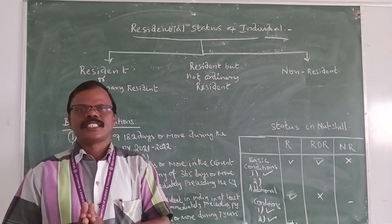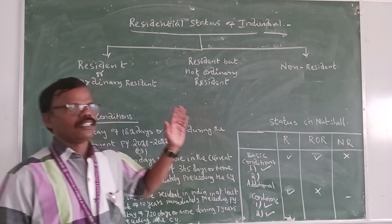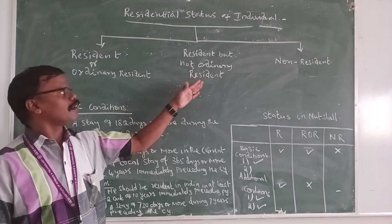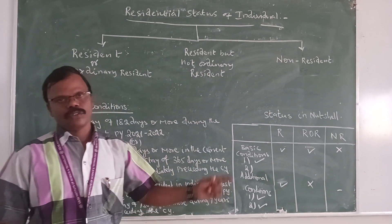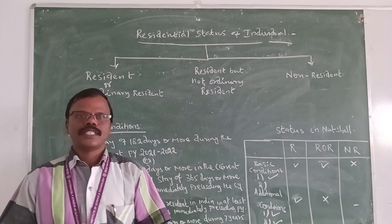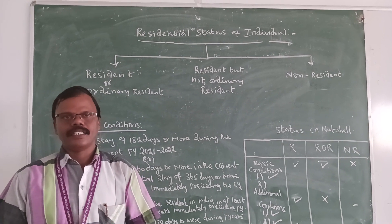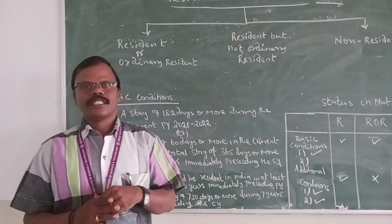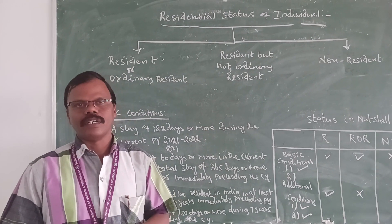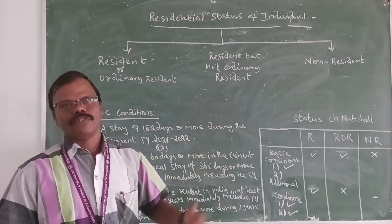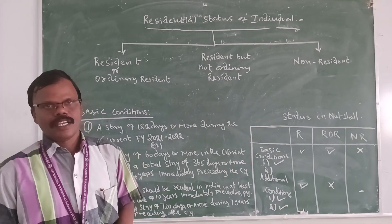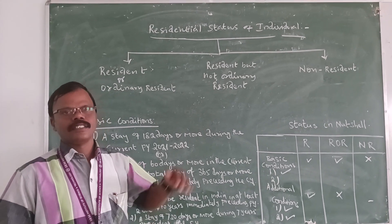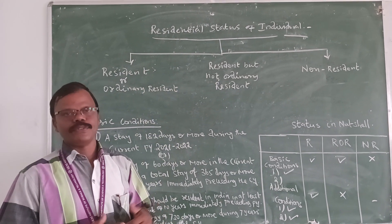Under this title, we must know about people's Residential Status — whether Resident and Ordinarily Resident, Resident but Not Ordinarily Resident, and Non-Resident. These three categories we must know under the Income Tax Act 1961 in India. One of the major topics is the Residential Status of Individual.